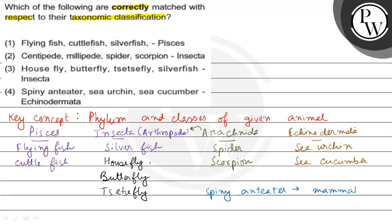To dekhiye, yahan par sirf option 3 hai jo match kar raha hai — yaani ki housefly, butterfly, tsetse fly, silverfish sab Insecta mein aa rahe hain. Option 4 mein spiny anteater mammal hai, is wajah se wrong ho raha hai. Spider aur scorpion Insecta ke andar nahi aata, is wajah se option 2 bhi wrong hai. Aur silverfish Pisces ke andar nahi aata, is wajah se option 1 wrong hai. So the final answer is option 3.